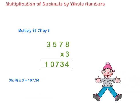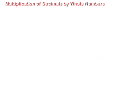Thus, 35.78 multiplied by 3 is equal to 107.34.